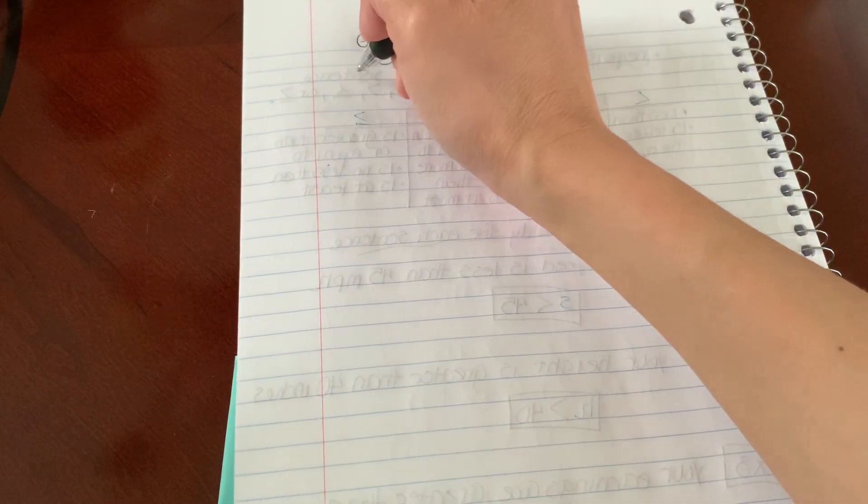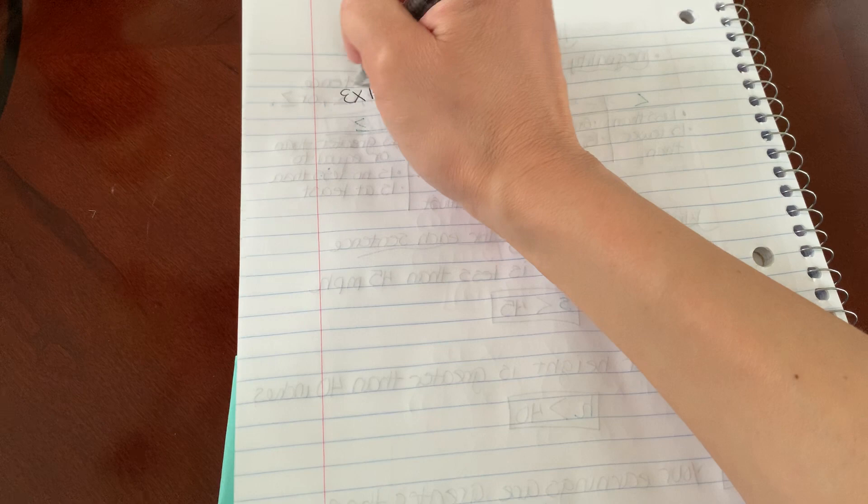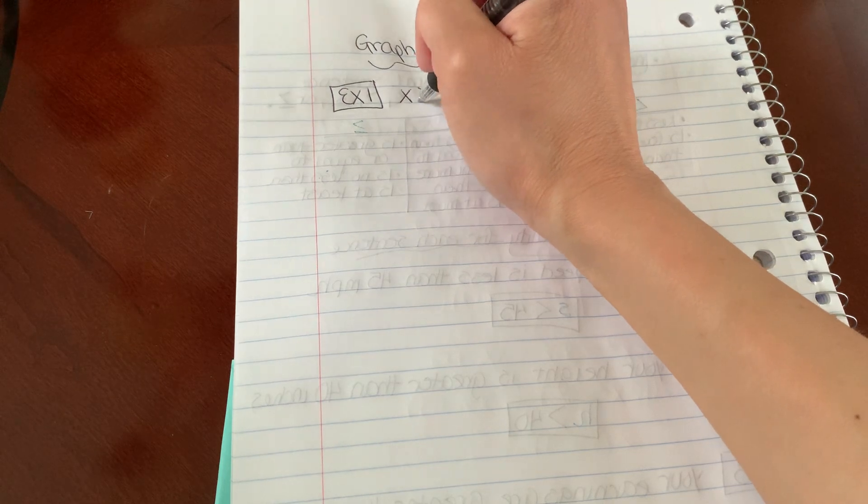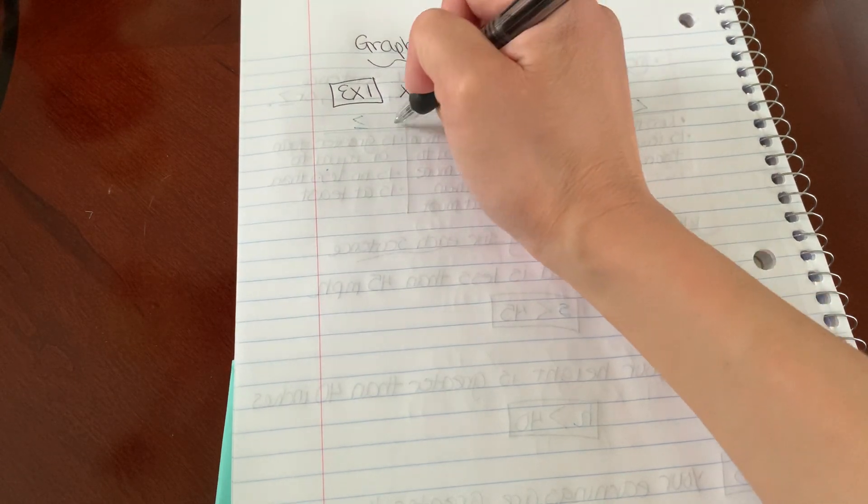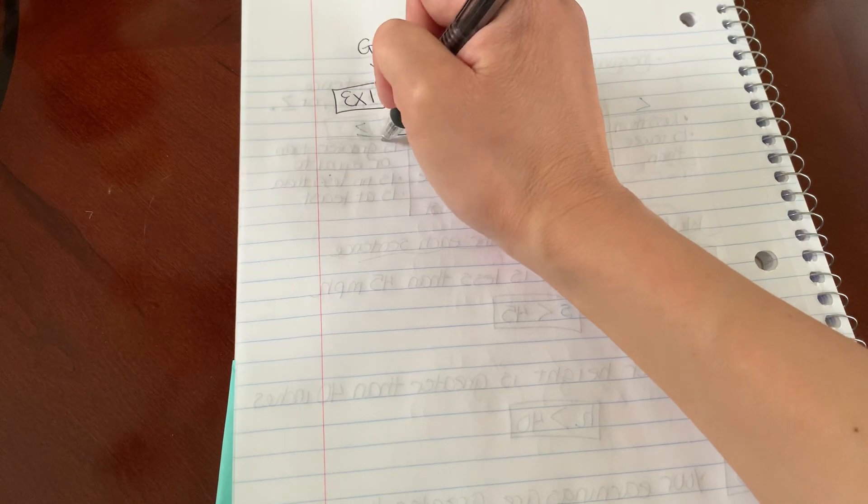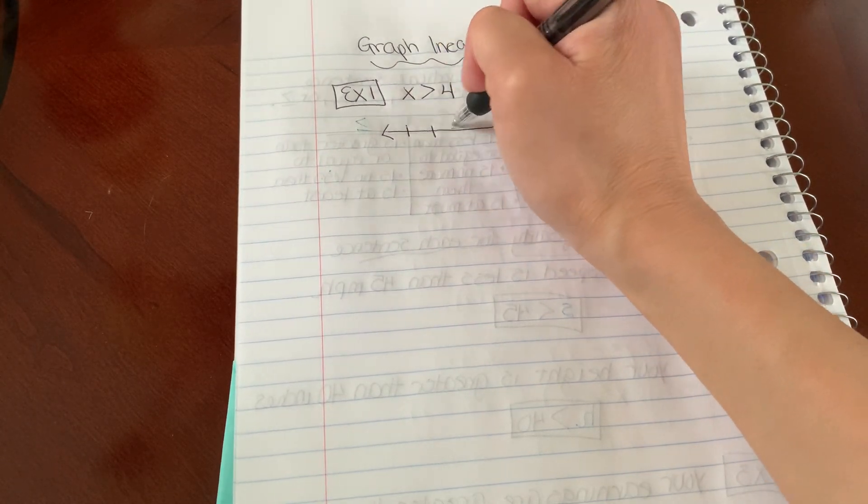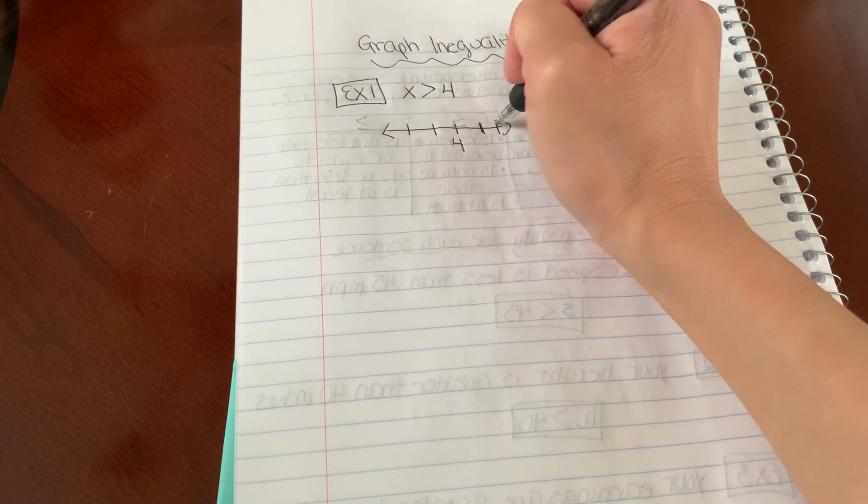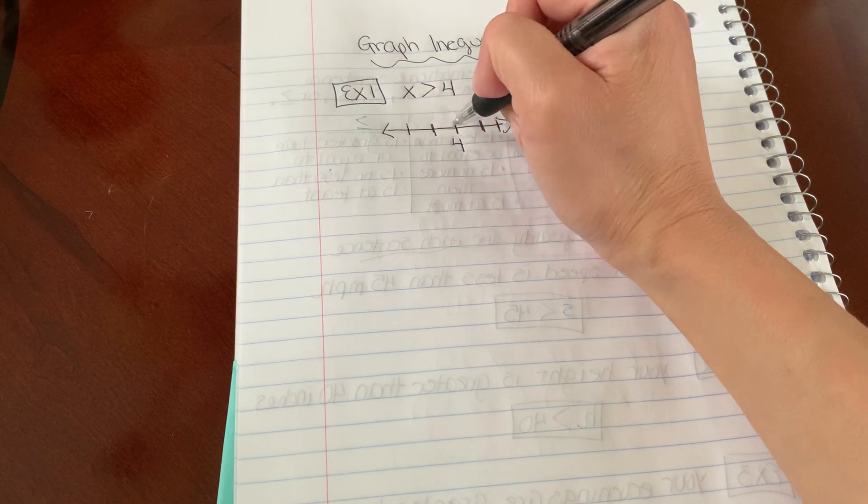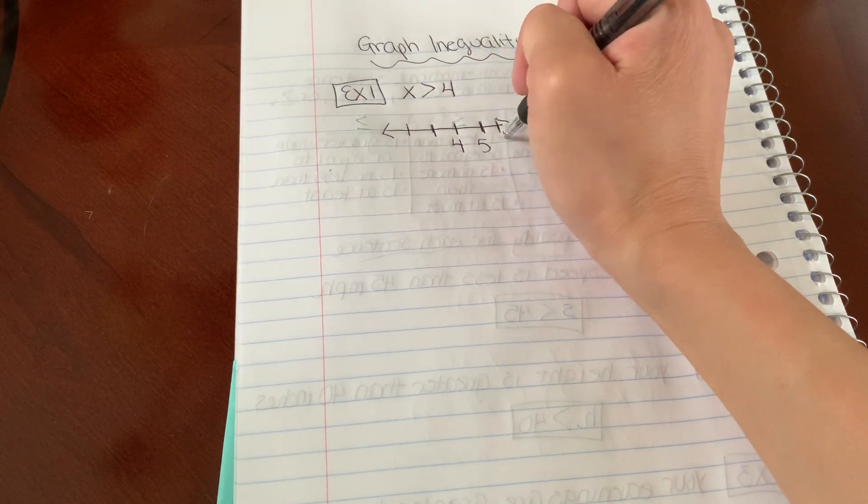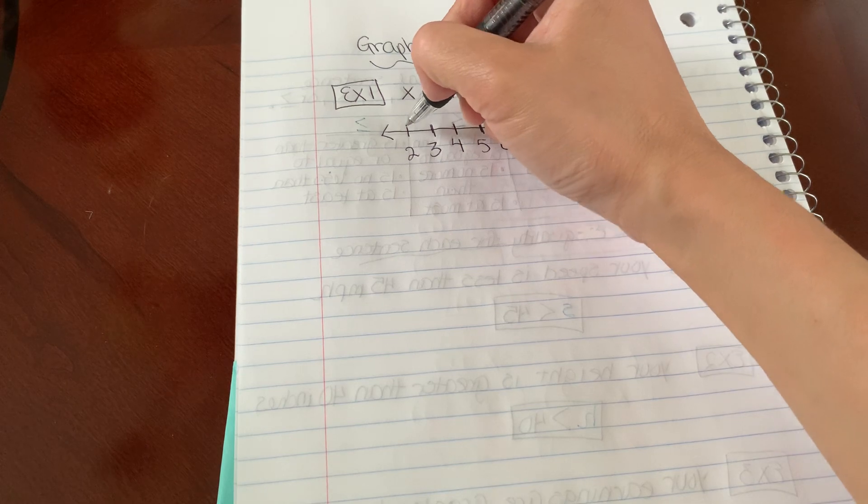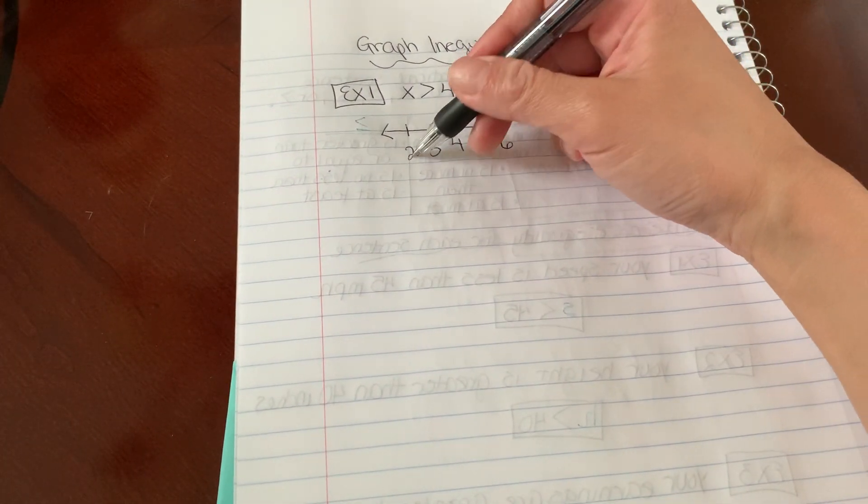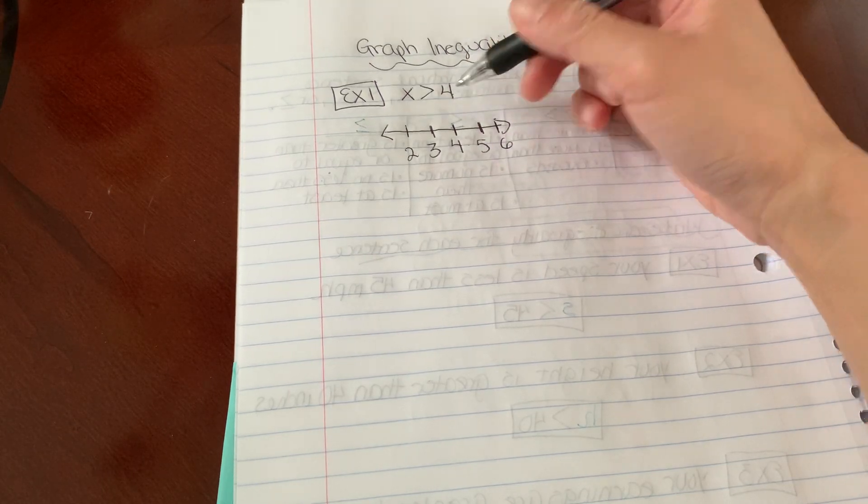So what does this mean? I'm just going to do an example here. Example one of graphing inequalities. If I have X is greater than 4, I'm going to draw a number line like this. So I'm going to draw a straight line and I'm going to put 4 in the middle here. And I'm going to do my best to make my little tick marks here evenly spread out. So I don't want one line here and then the next line way over here. I want them to be evenly spread out. So my number line here is 2, 3, 4, 5, and 6 because I want to include 4.